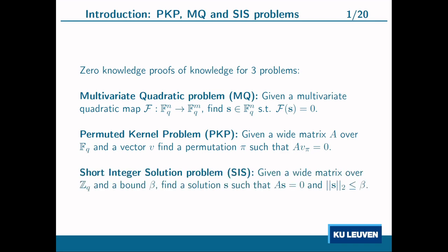Finally, we have the short integer solution problem, which is probably the most well-known of the three. Here we are again given a wide matrix, and we want to find a vector in the kernel of this matrix. But now the constraint is that we must find a vector whose L2 norm is bounded by some given bound.